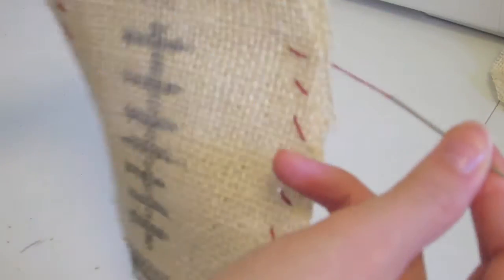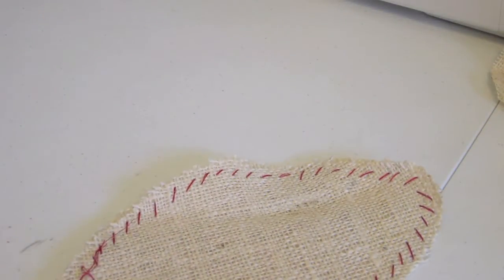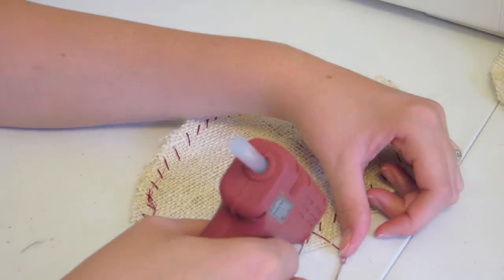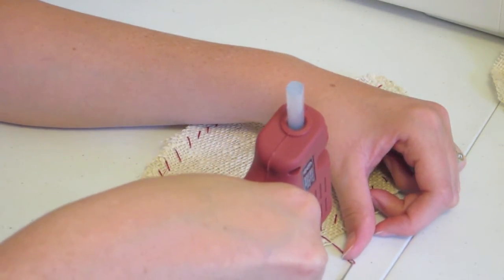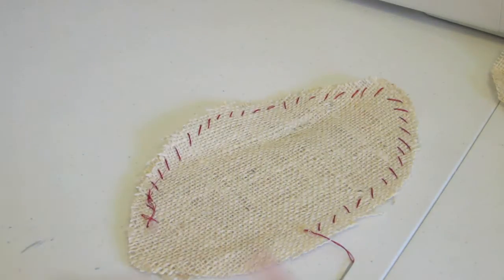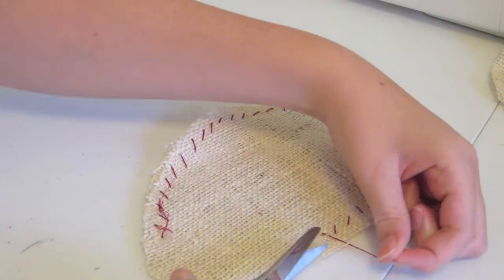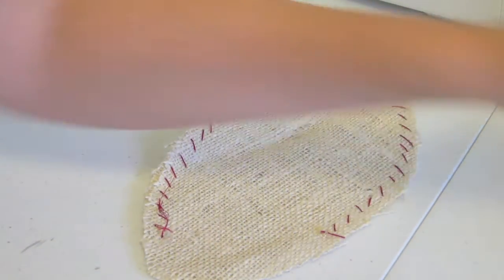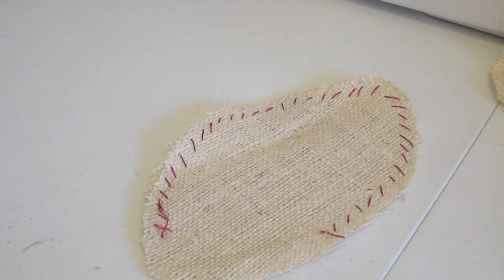When I've run out of thread and I'm ready to put the stuffing in, I'll put another dab of hot glue on my end so I don't even have to tie a knot. It just finishes it off for us. Then I can cut my threads and let that sit for a minute while I get the stuffing ready.